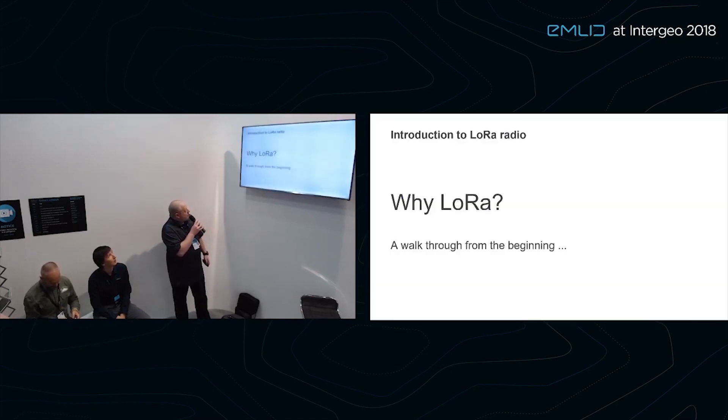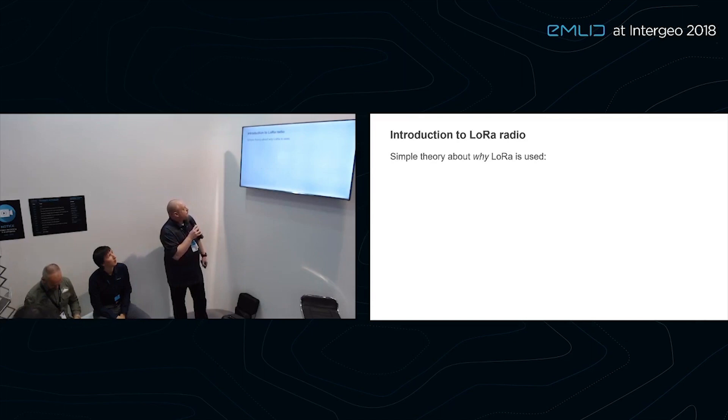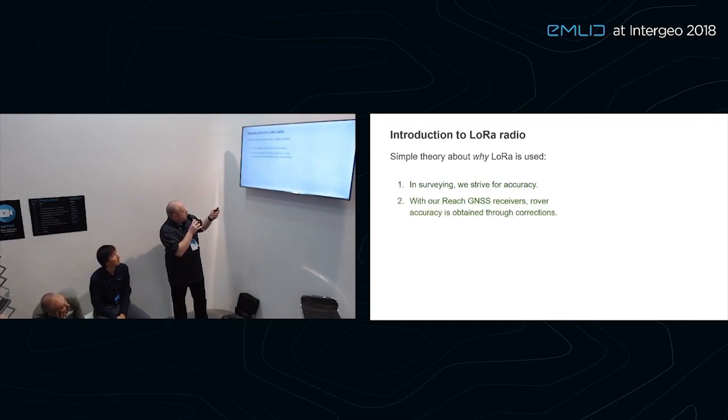Today we're talking about LoRa Radio. A lot of people use the LoRa Radio for short range RTK, and we're trying to figure out what's the maximum range we can get with our LoRa Radio. So here's a little walkthrough, some simple theory about why LoRa is used. We're looking for accuracy. Our accuracy is obtained through the corrections that come from our base.